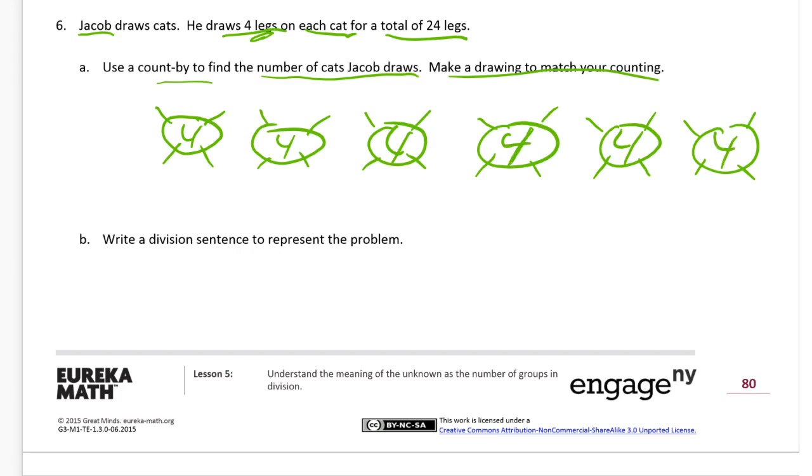Now, the count by is going to be, we start off with four. And then four more is going to be eight. And then four more again is twelve. If we add four to that twelve, we're going to get sixteen. We add four more to that, we get twenty. And then we add four more again, and now we have twenty-four legs. There's our count by.